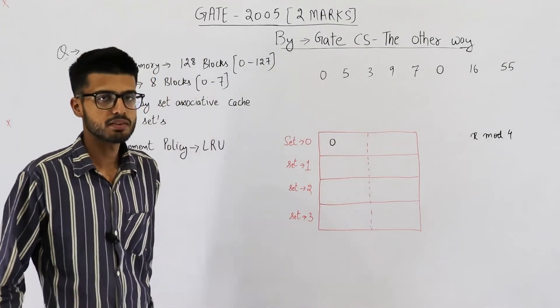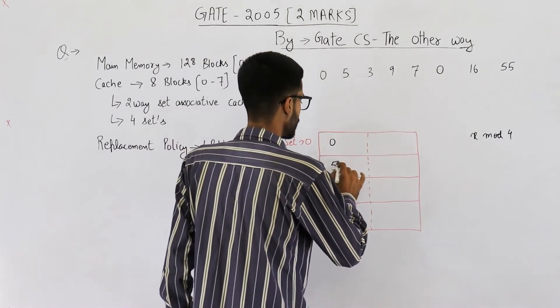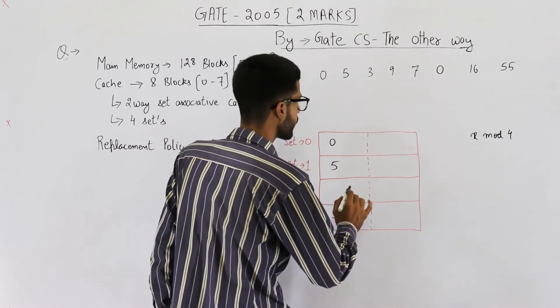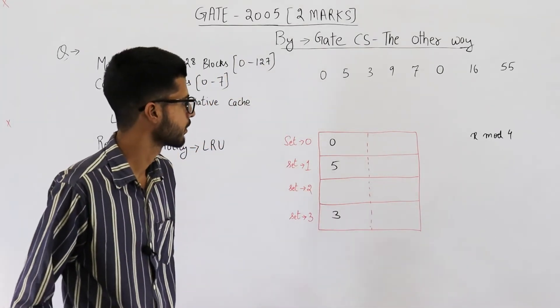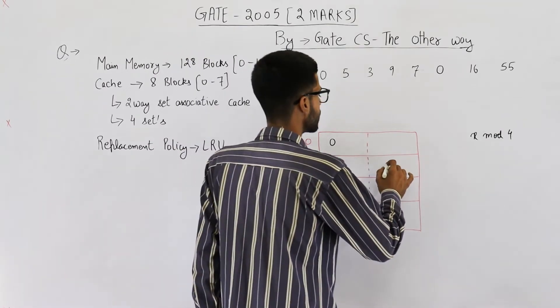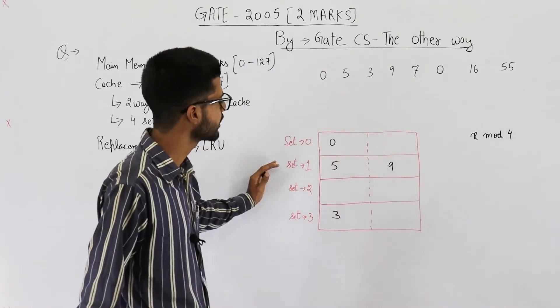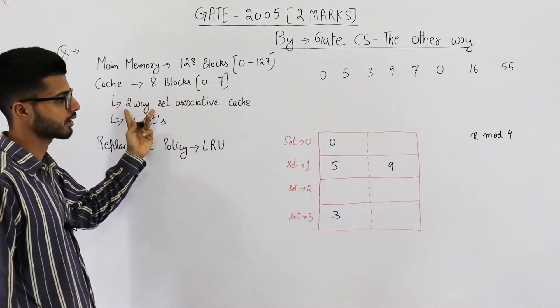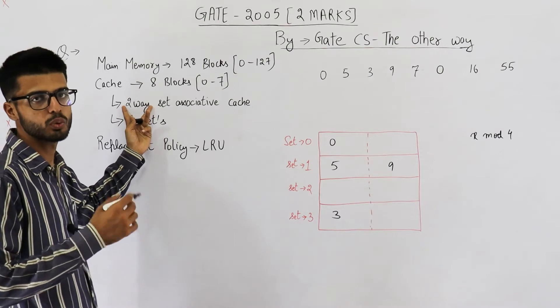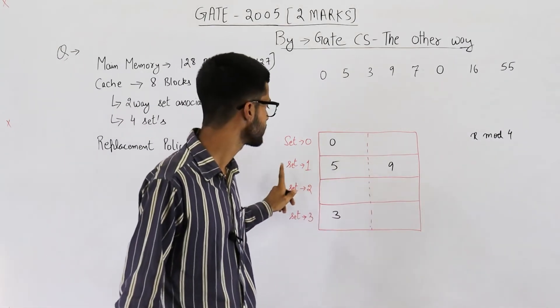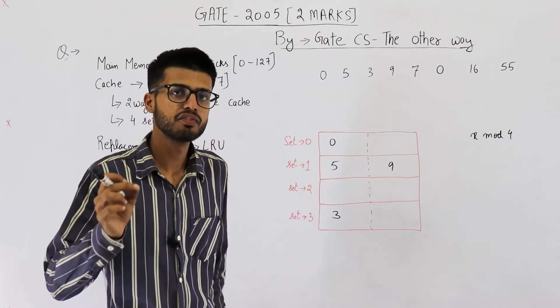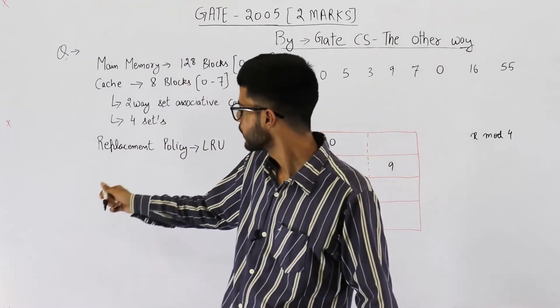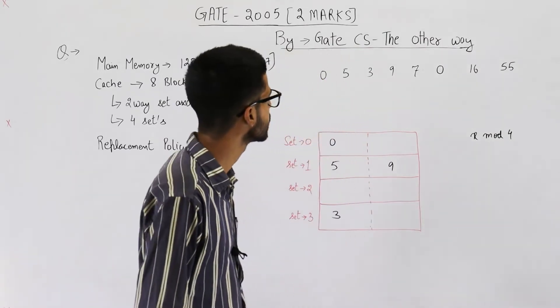5 mod 4 is 1. So, 5 will be mapped onto set number 1. Similarly, 3 mod 4 is 3. 3 will be mapped here. 9 mod 4 will be 1. So, 9 will be mapped here. Now, you see, set number 1 is completely filled. Each set has only 2 elements or only 2 cache blocks. Both of the blocks of set 1 are filled. Even if one more element gets mapped here, we'll have to replace any one of these. And replacement policy given is LRU.